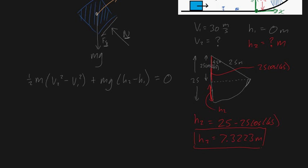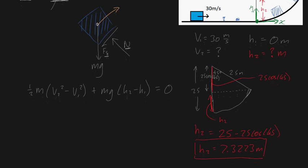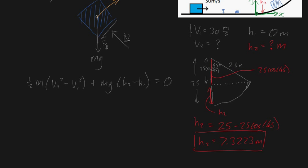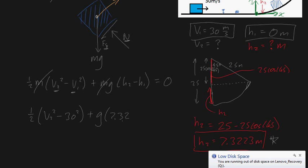We've got all our values sorted. One equation, one unknown. This is ½m(v2² - v1²) + mg(h2 - h1) = 0. If we divide both sides by m, mass cancels out, leaving ½(v2² - 30²). As a brief aside, v2 is actually a scalar - the magnitude of velocity, not direction. So it's minus 30 squared plus g times 7.3223 minus 0, equals 0.